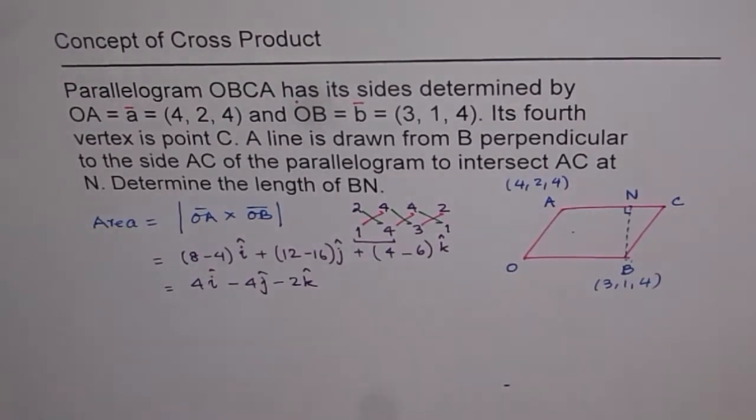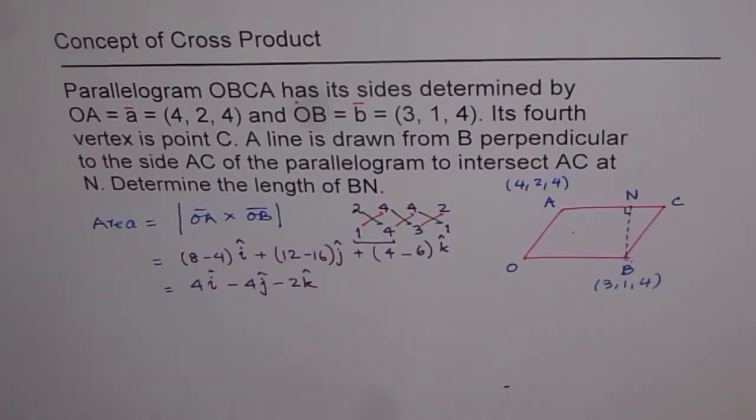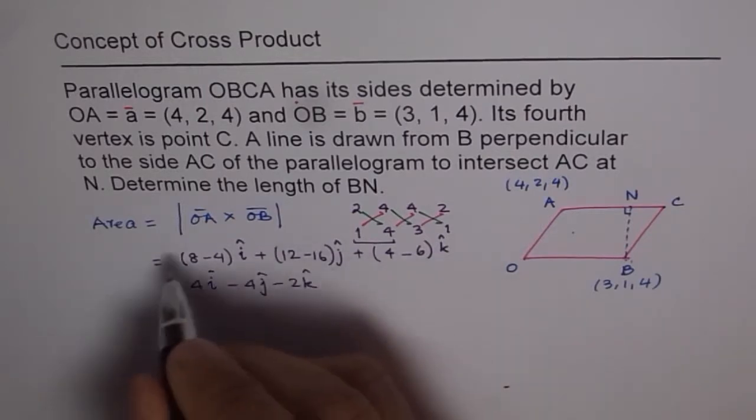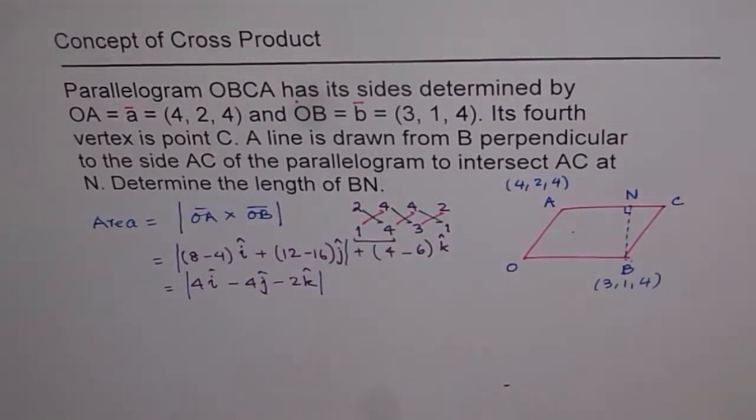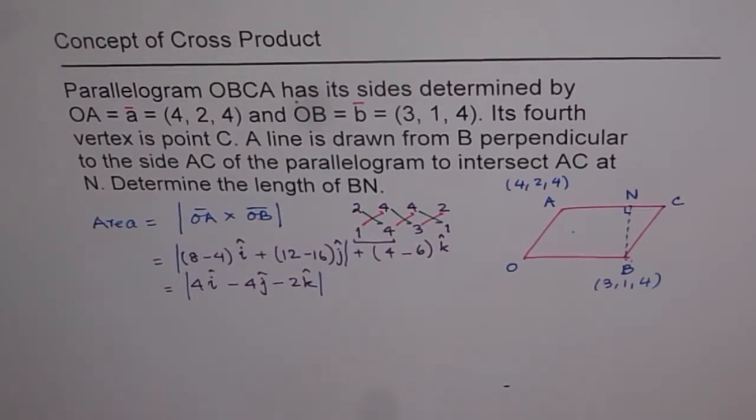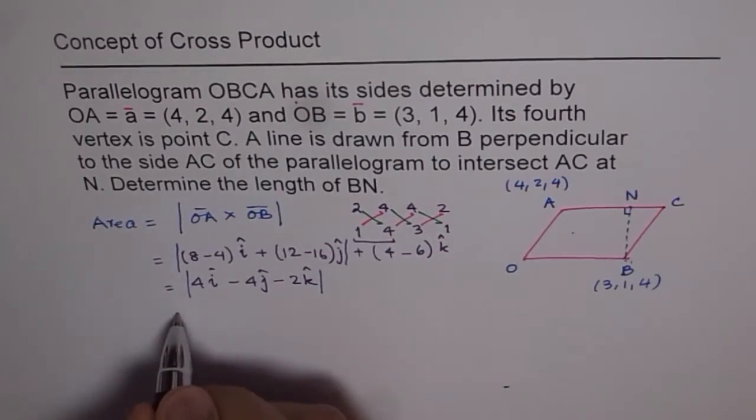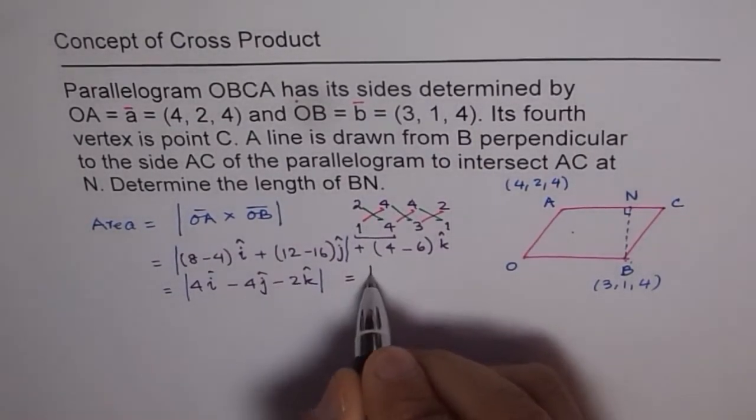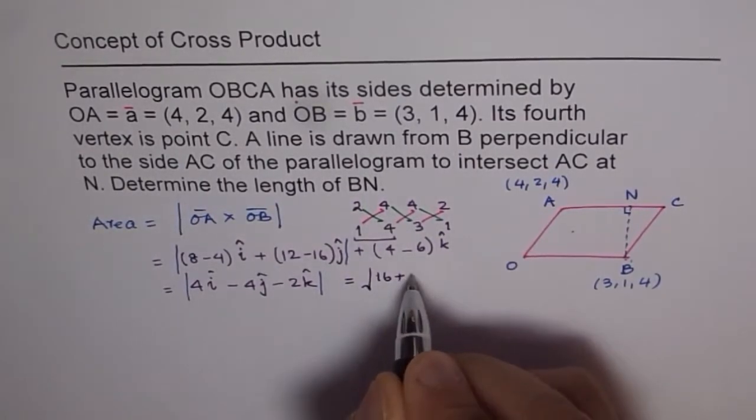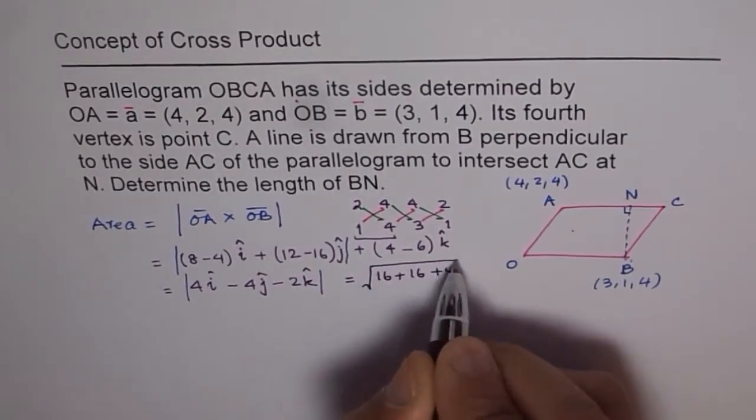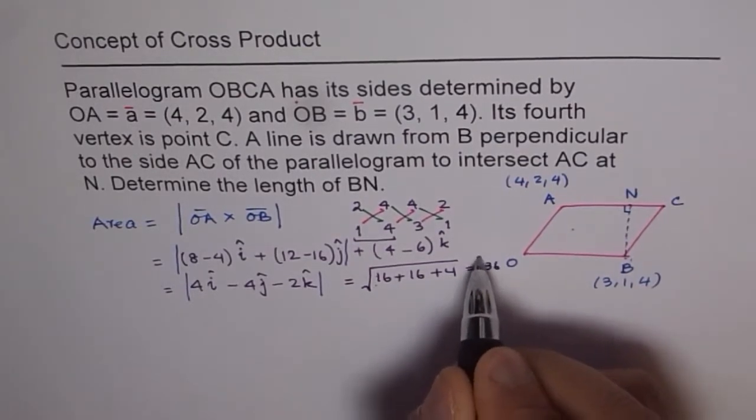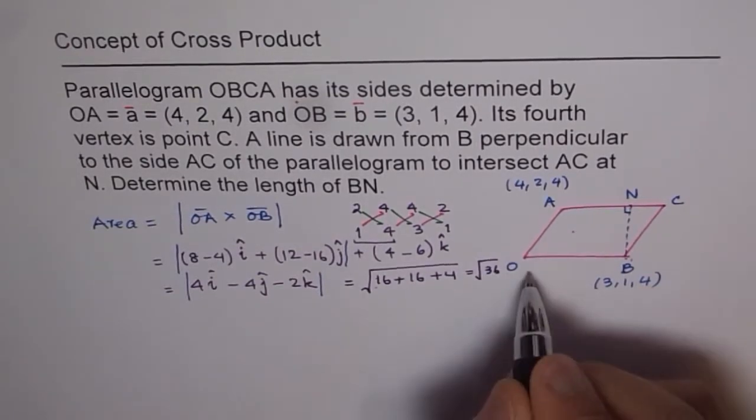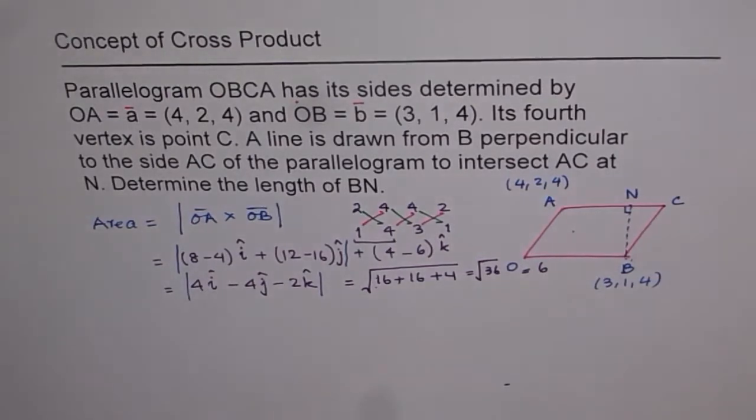Now this can be written as 8 minus 4 is 4I, 12 minus 16 is minus 4J, and 4 minus 6 is minus 2K. So that becomes our vector. Now, in this particular vector, we need to find the magnitude. So this is the vector inside. So we have the magnitude. That makes area. Area is scalar quantity. So now we need to find magnitude of this. What is the magnitude? Magnitude is square root of A square plus B square plus C square. So the magnitude for this is square root of 4 square, which is 16, plus 4 square, which is 16, plus 2 square, which is 4. And that is square root of 16 plus 16 is 32, plus 4 is 36. So we get equal to 6. So we get the area of this parallelogram.